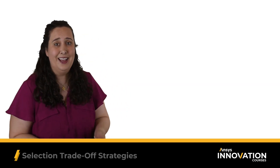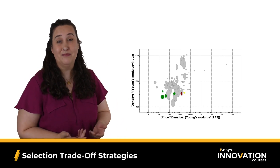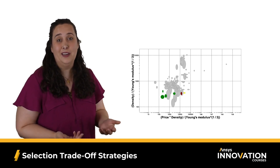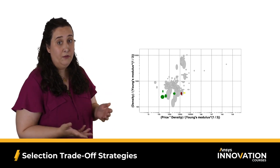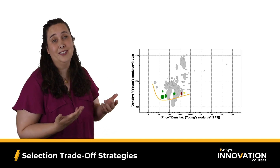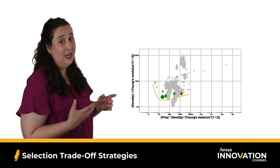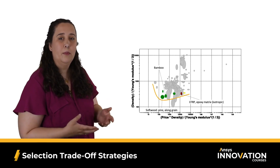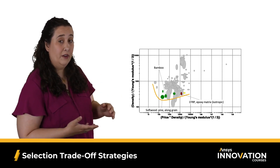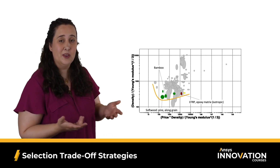Sometimes you get lucky and one or two material candidates clearly outperform the rest, but this often doesn't happen. The first strategy is simply drawing the trade-off curve and using intuition to select materials that best fit your needs. In the longboard example, pine and bamboo perform really well. Carbon fiber lays along the trade-off curve but is much more expensive — depending on the end use, however, this could be acceptable.